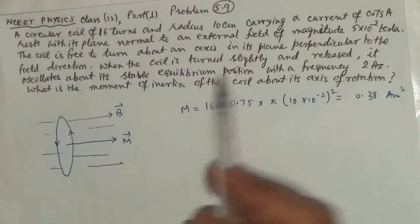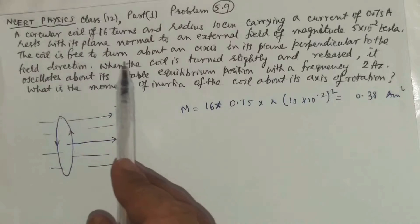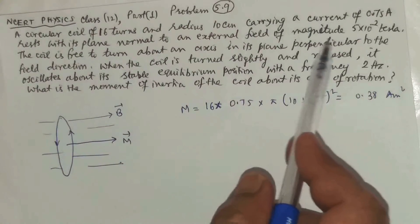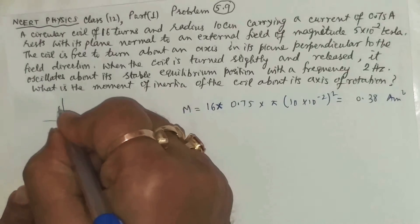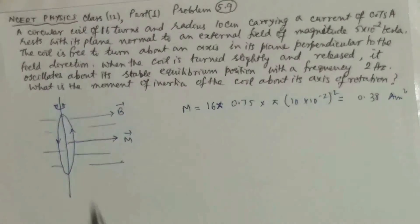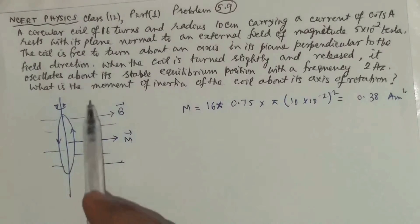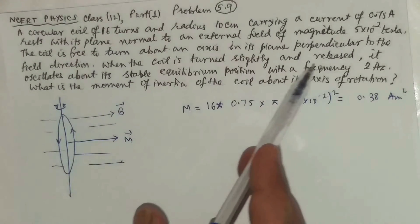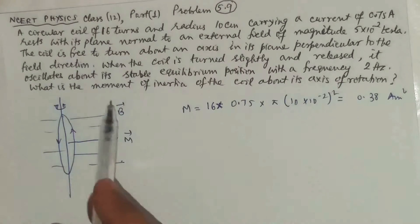Now they are saying that it is the stable equilibrium position. The coil is free to turn about an axis in its plane perpendicular to the field direction. The axis coincides with one of the diameters in its same plane. When the coil is turned slightly and released, it oscillates about its stable equilibrium position with a frequency 2 hertz.